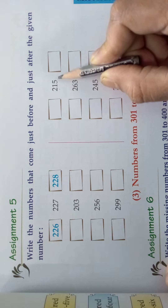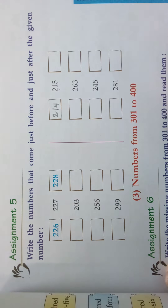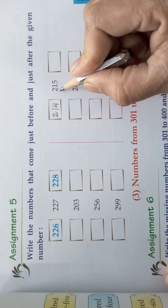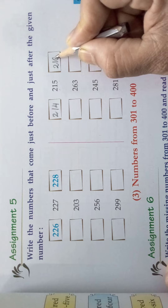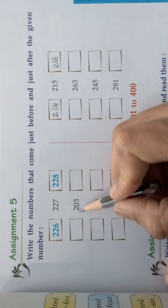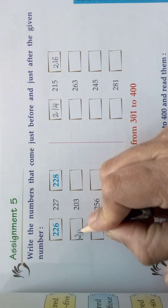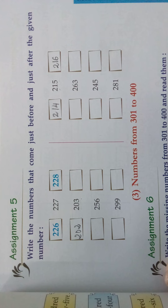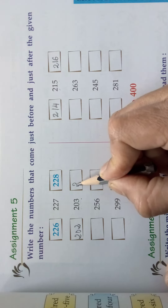What will come before two hundred and fifteen? Two hundred and fourteen. After two hundred and fifteen what will come? Two hundred and sixteen. How easy, no children! Come, I will do one more sum. Two hundred and three is the given number. What will come before two hundred and three? Two hundred and two. After two hundred and three what will come? Two hundred and four.